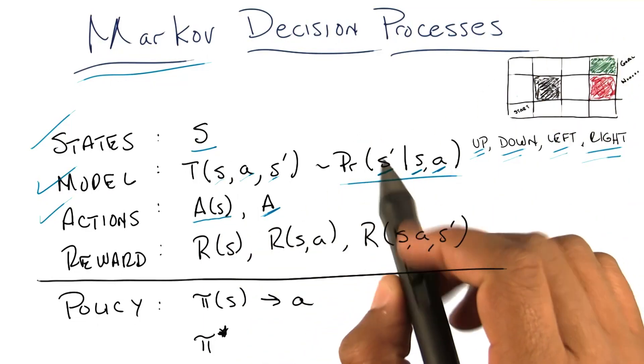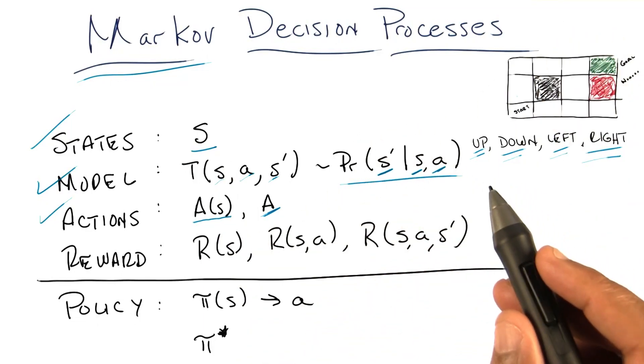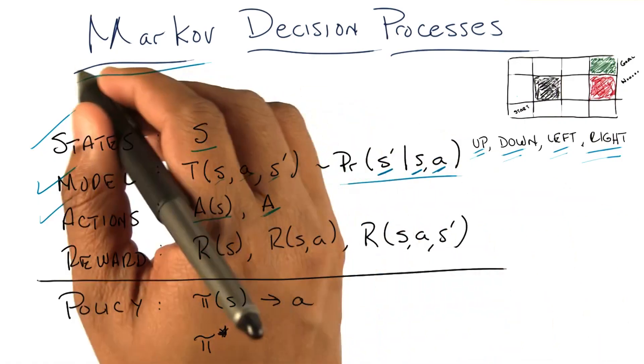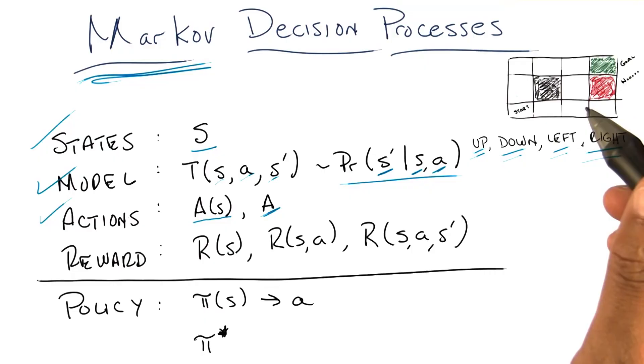Now, I actually snuck something important in here. I actually snuck two things that are important in here. The first is what's called the Markovian property.